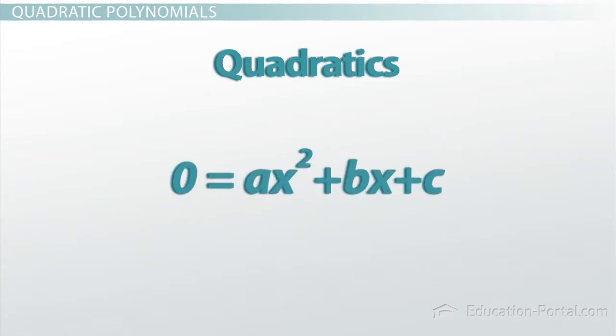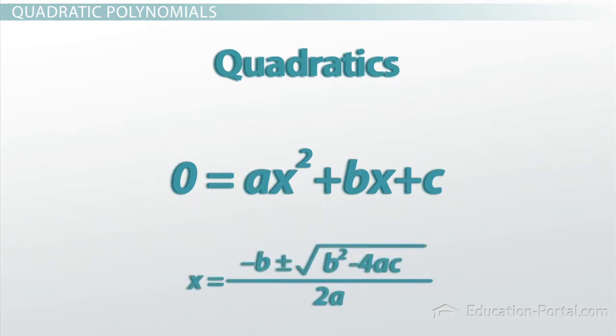For example, if you have 0 equals ax squared plus bx plus c, you can solve, given some constants a, b, and c, for x. And to do this, you use the quadratic formula.